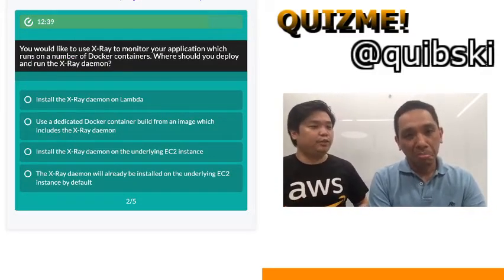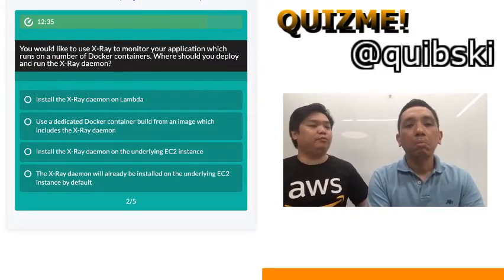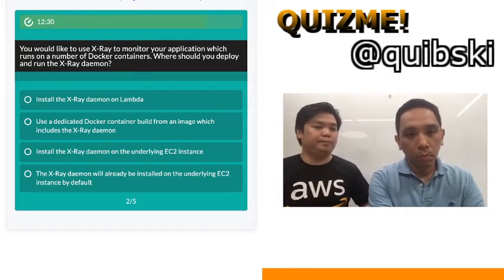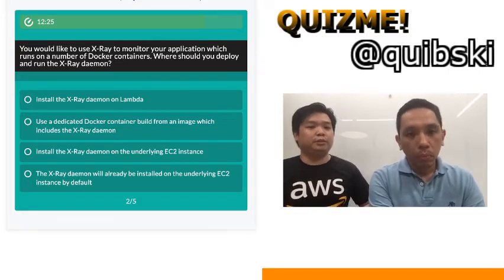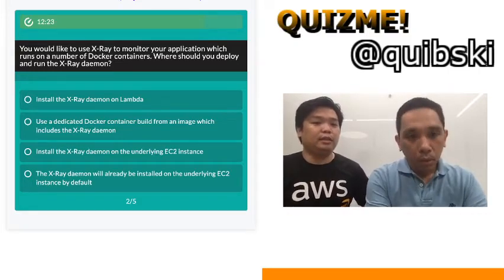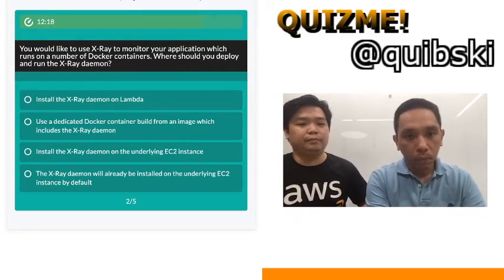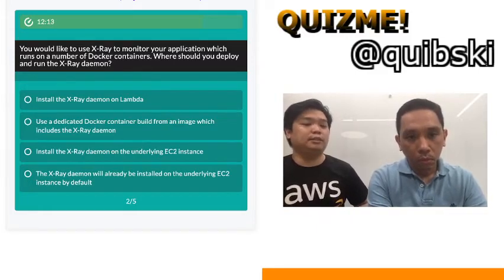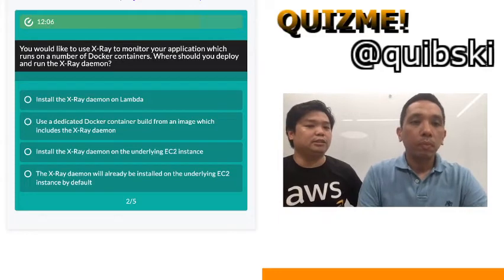You would like to use X-Ray to monitor your application which runs on a number of Docker containers. Where should you deploy and run the X-Ray daemon? Option 1: install the X-Ray daemon on Lambda. Option 2: use a dedicated Docker container built from an image which includes the X-Ray daemon. Option 3: install the X-Ray daemon on the underlying EC2 instance. Option 4: the X-Ray daemon will already be installed on the underlying EC2 instance by default.